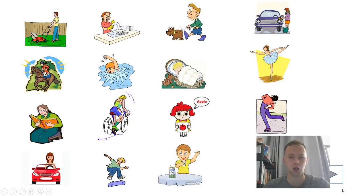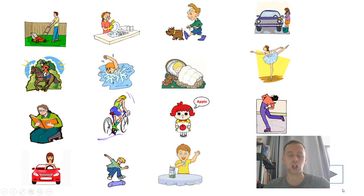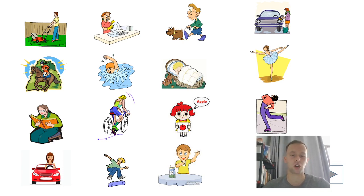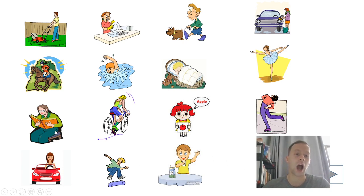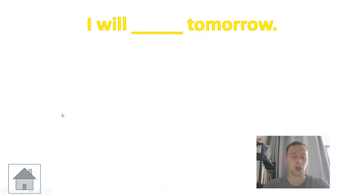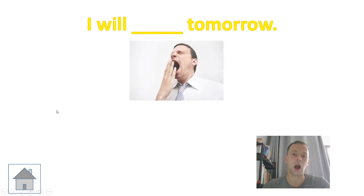Then we're going to go to the first page where we have some pictures. Students will use the pictures to make a sentence. In this version, I made it for Grade 5 and the structure was 'I will.' For example, I'll choose this one: 'I will read books tomorrow.' Then we'll go to another page with a question and the student will answer — for example, 'I will sleep tomorrow.'